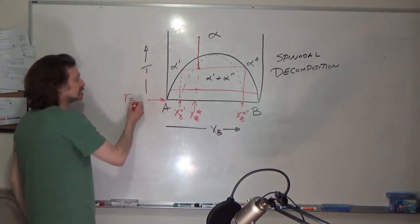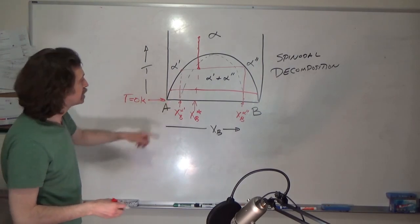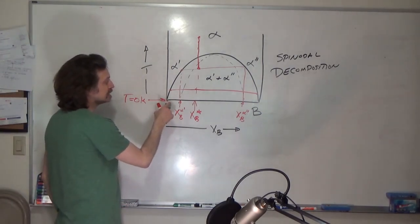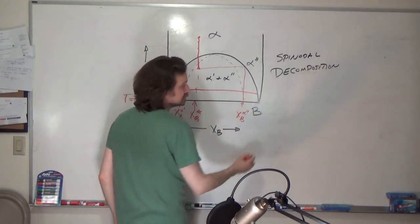Right as we reach zero Kelvin—this is going to be our hypothetical T equals zero K—right at zero Kelvin our alpha prime is pure A and our alpha double prime is pure B.